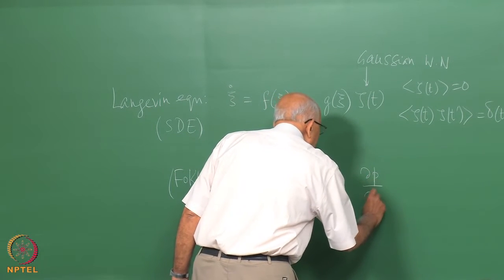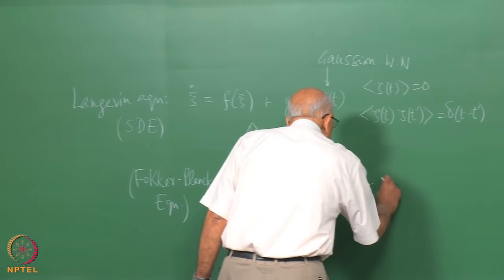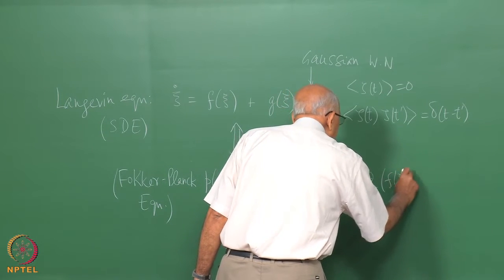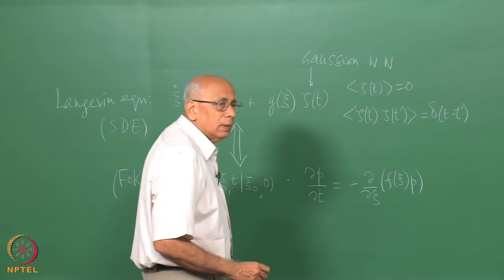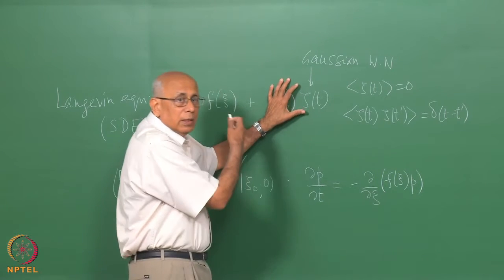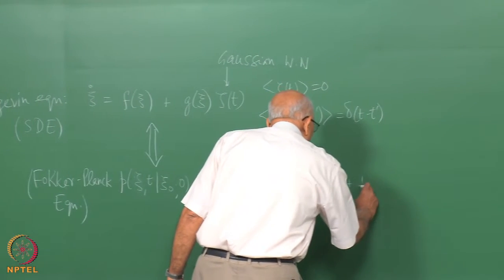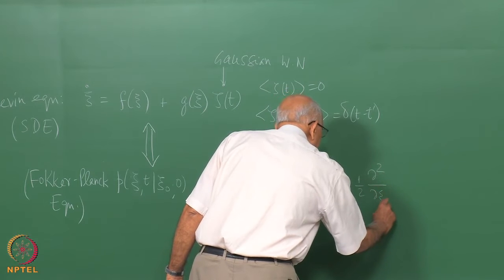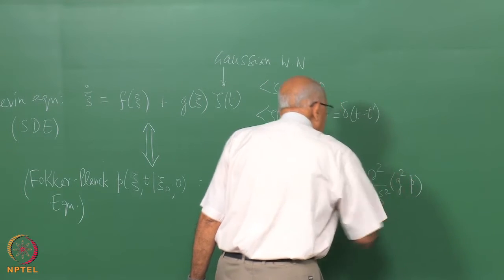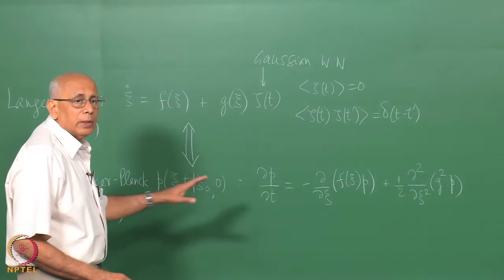The Fokker-Planck equation reads: delta P over delta t equals a drift term, which is minus delta over delta xi of F of xi times P — that is the deterministic part, the drift part; without this you have an ordinary differential equation — plus a diffusion term which is one-half times delta squared over delta xi squared of g-squared times P. G-squared is the square of the function g.